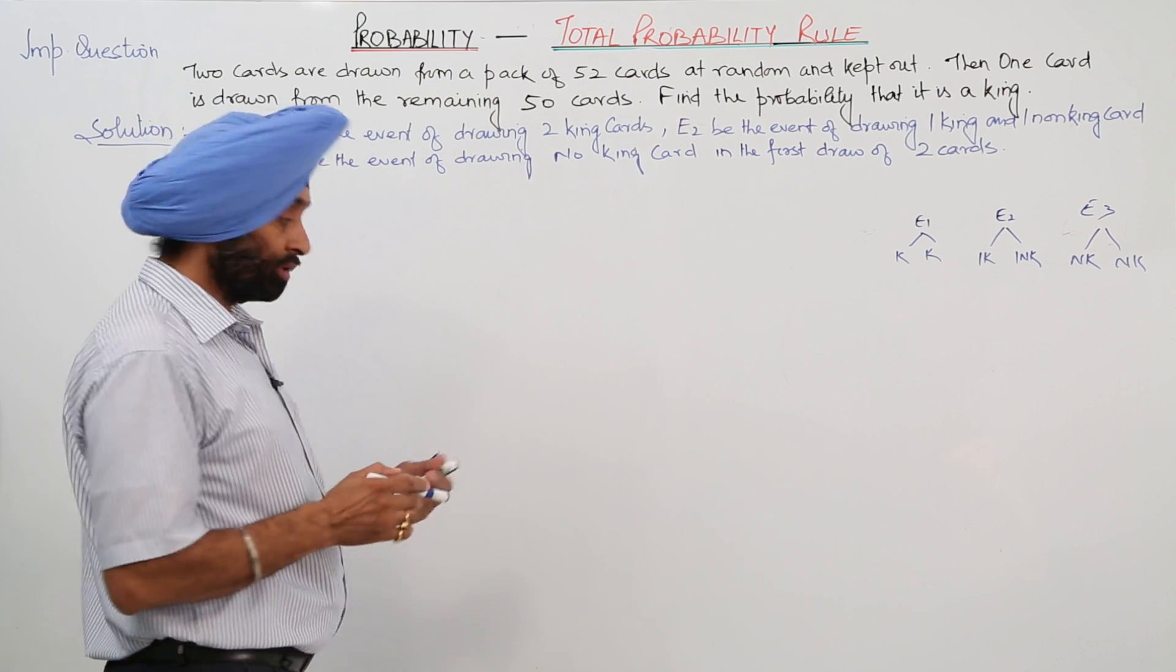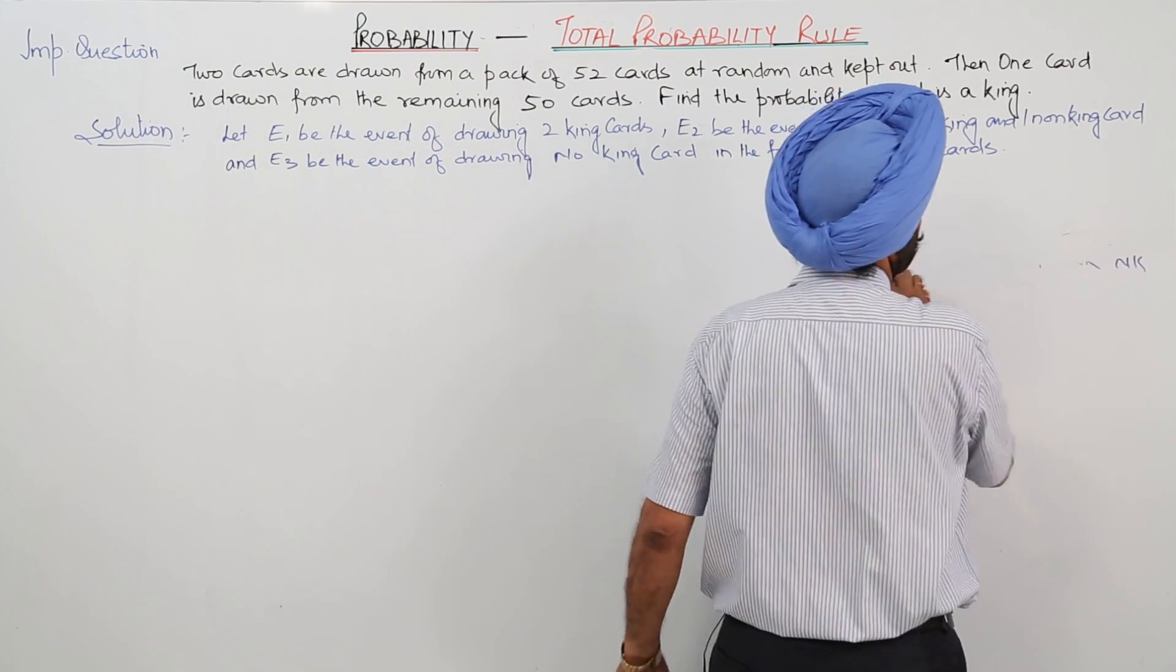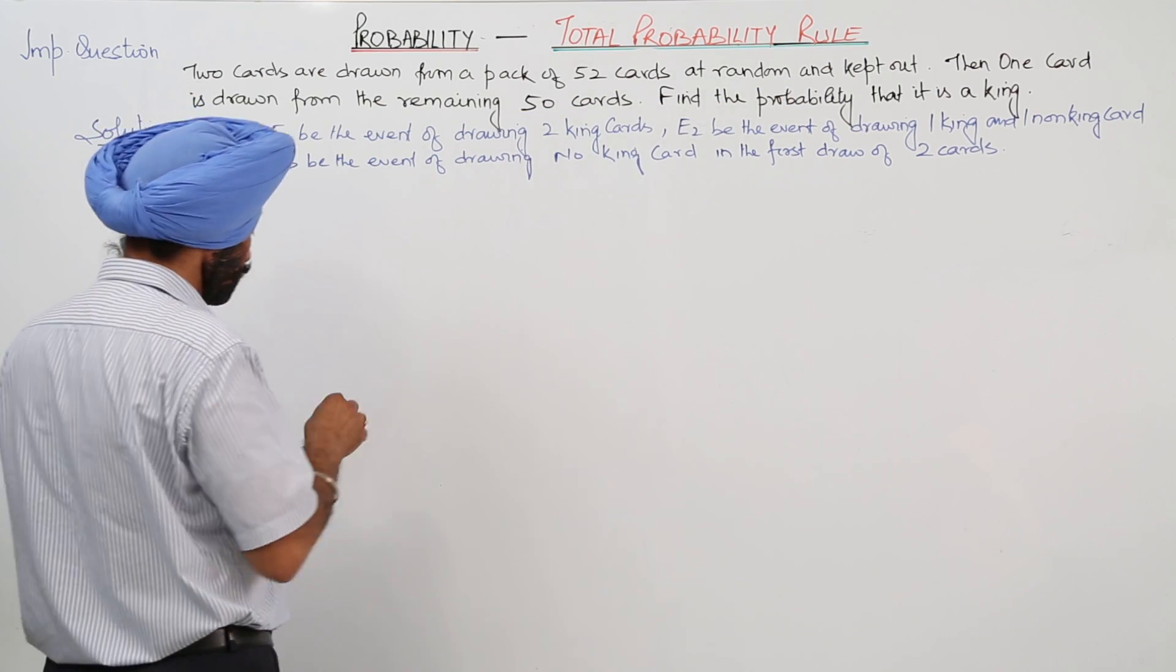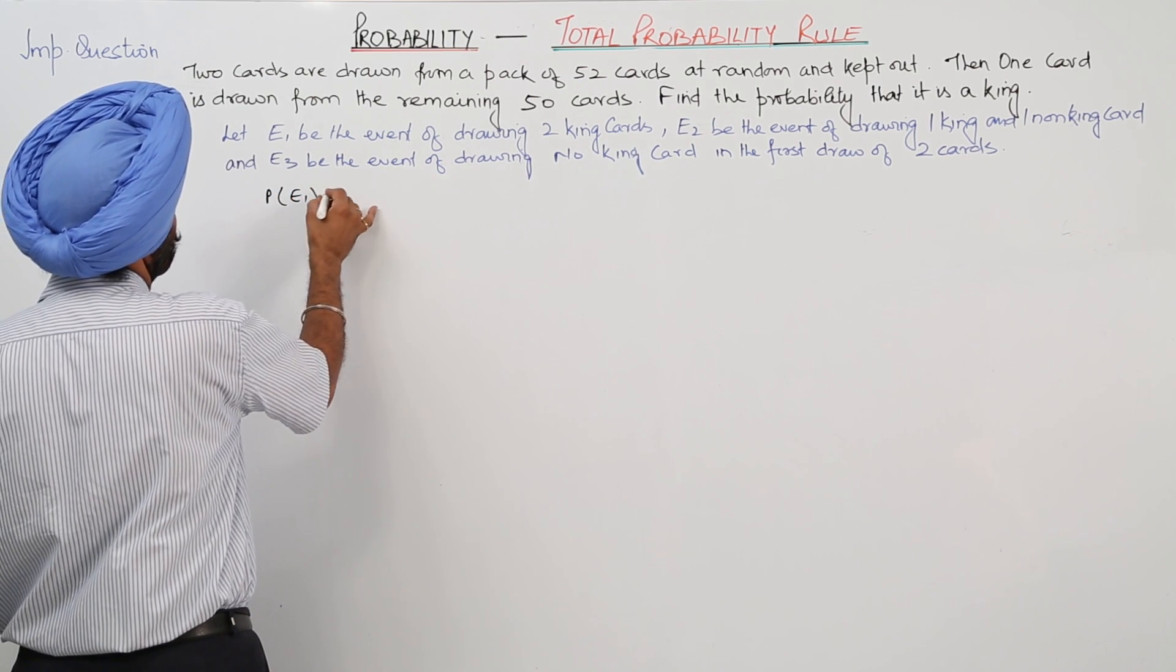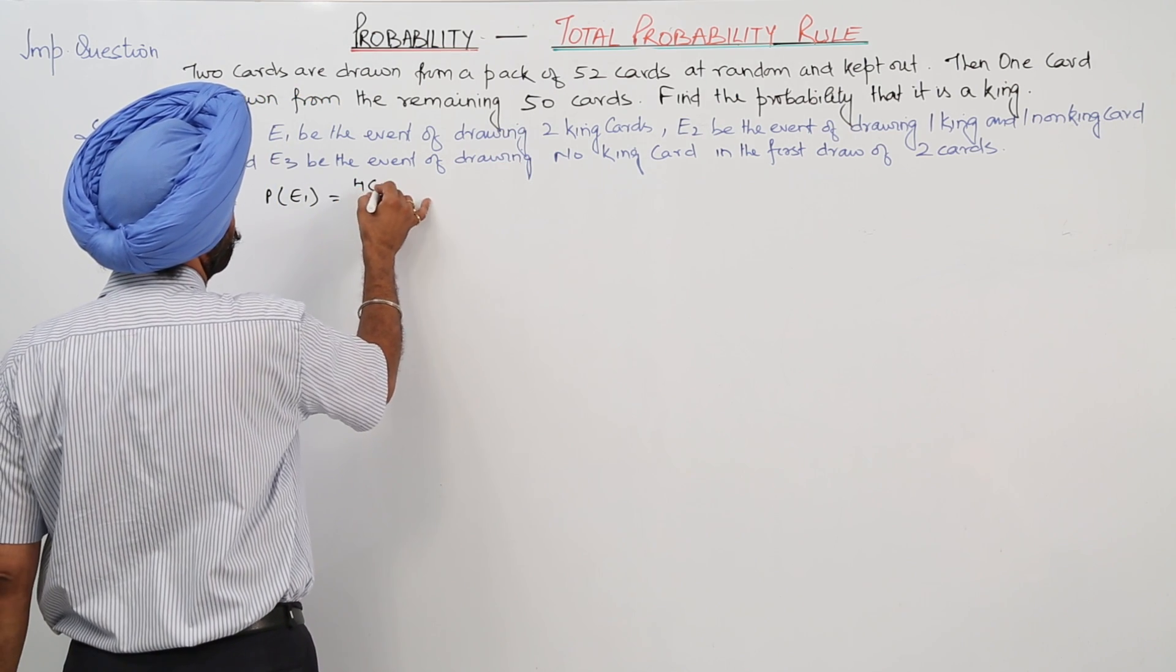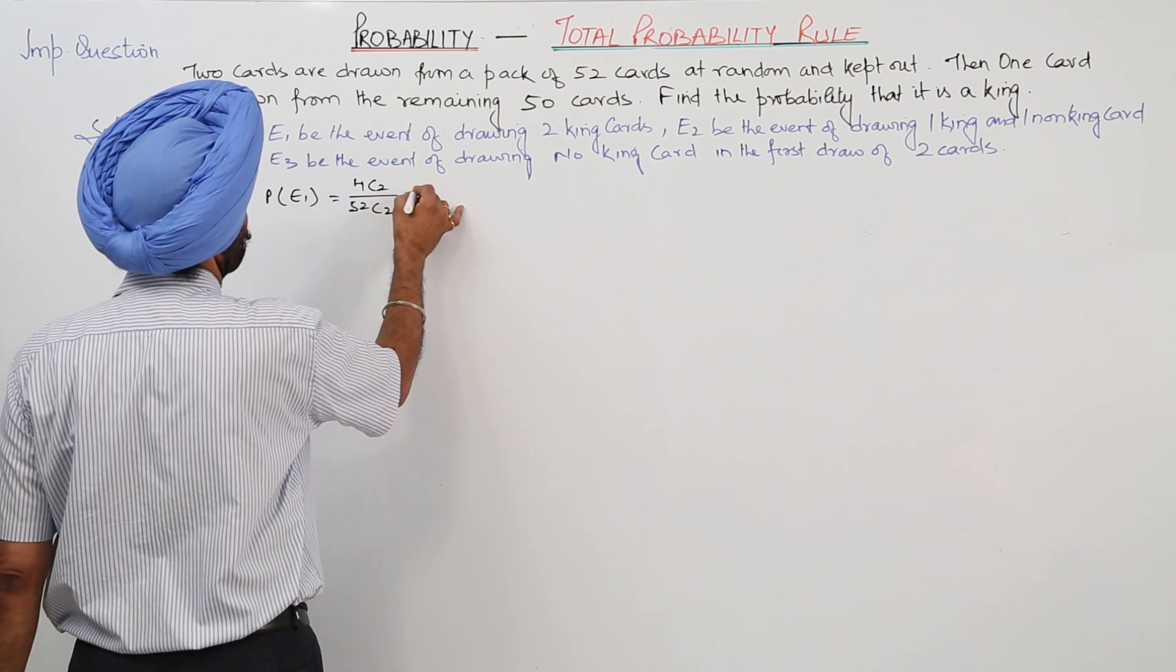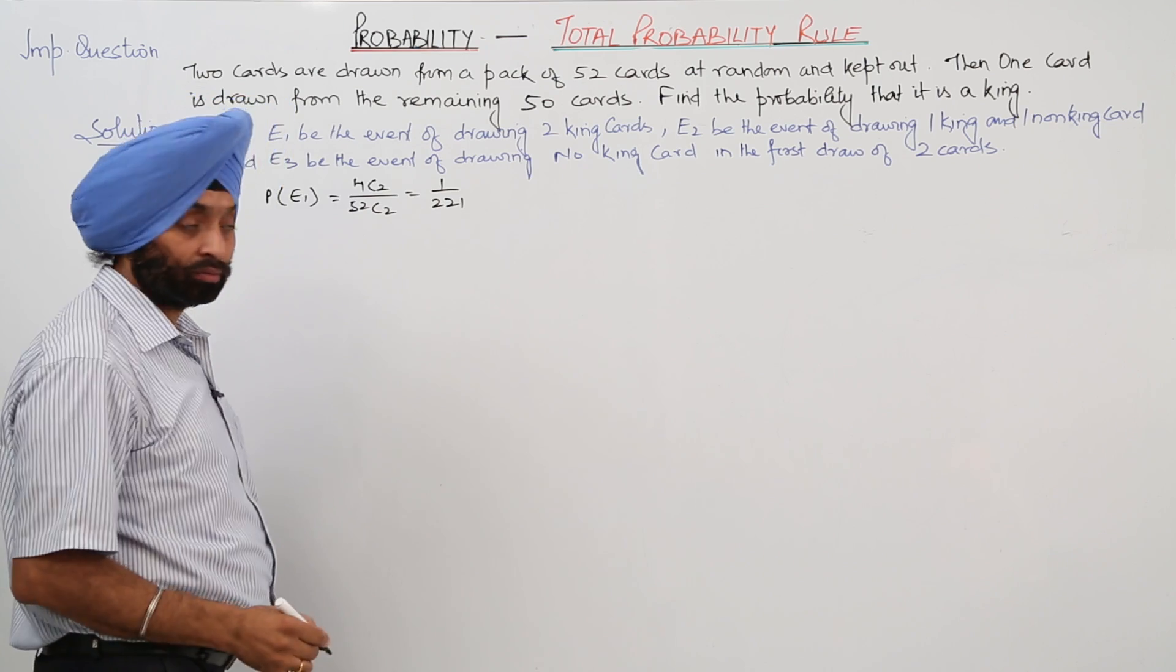So that's what I have written. Now what is the probability for event 1? Probability for event 1 is equal to, now event 1 is 2 king cards, so total king cards are 4. 4C2 upon 52C2. Now on solving this will become 1 upon 221.